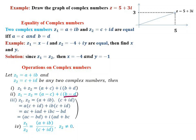For multiplication, z1 times z2 equals a plus ib times c plus id. Expanding: ac plus iad plus ibc plus i-squared bd. Since i-squared equals minus 1, this gives ac minus bd plus i times ad plus bc. So the real part is ac minus bd and the imaginary part is ad plus bc.